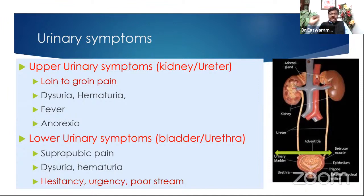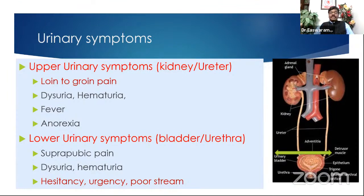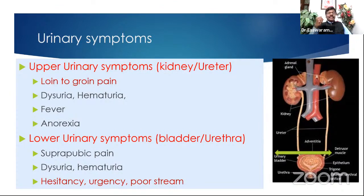The second symptom is strangury — an urge to urinate with intense desire, but when you go to the toilet there's nothing in the bladder. This is like tenesmus for the rectum: tenesmus is a symptom of proctitis, while strangury or urgency indicates trigonitis or cystitis. Urgency can also be due to an unstable bladder contraction or bladder dyssynergia.